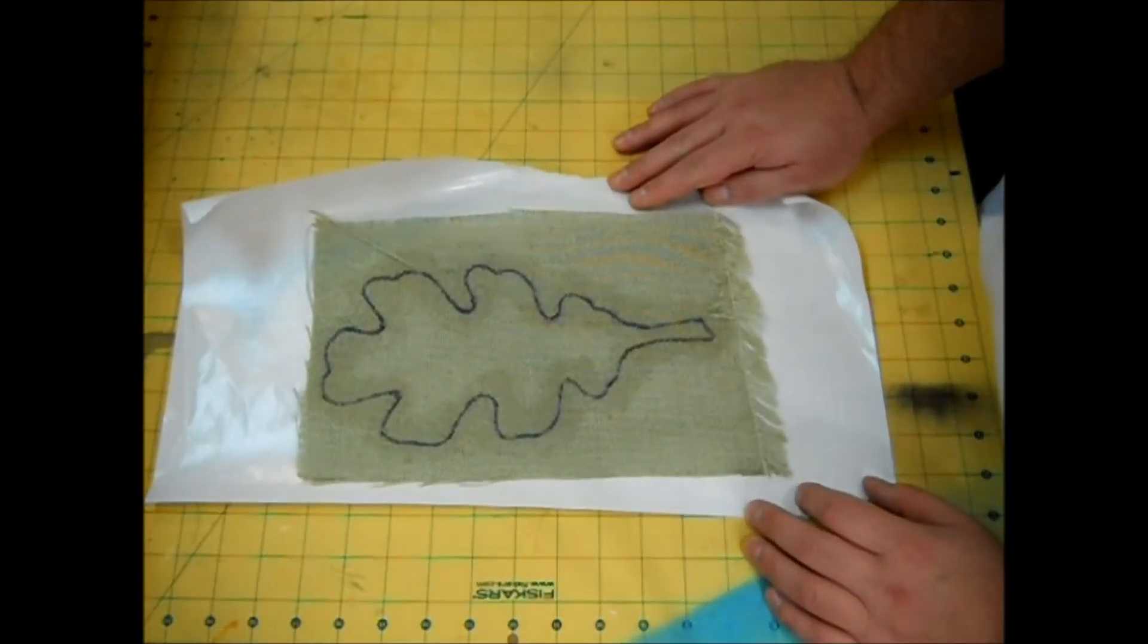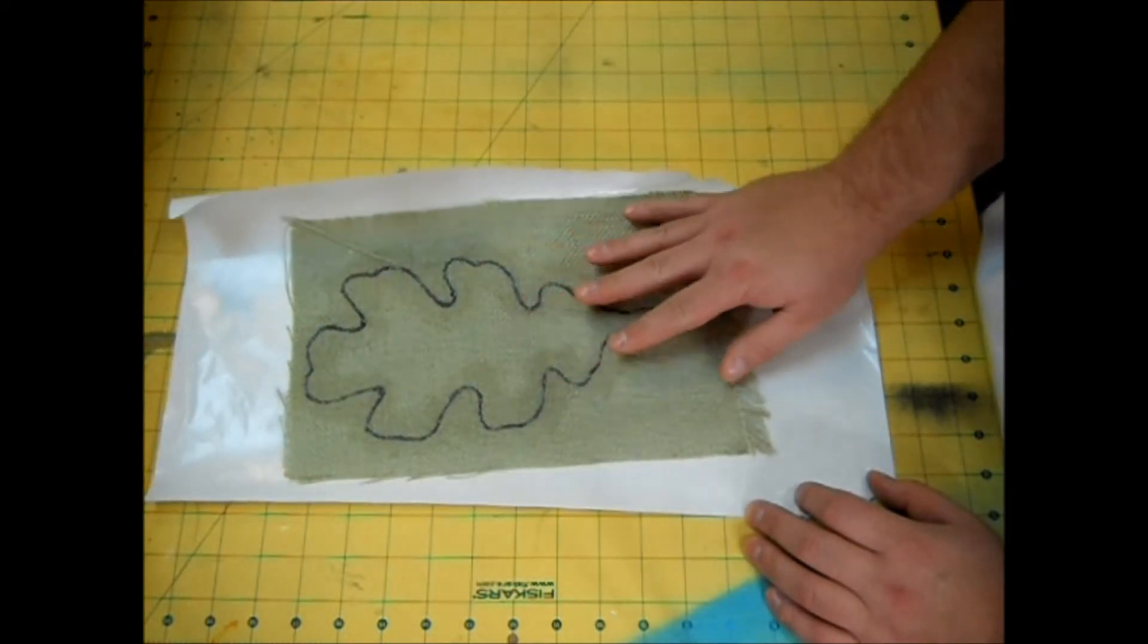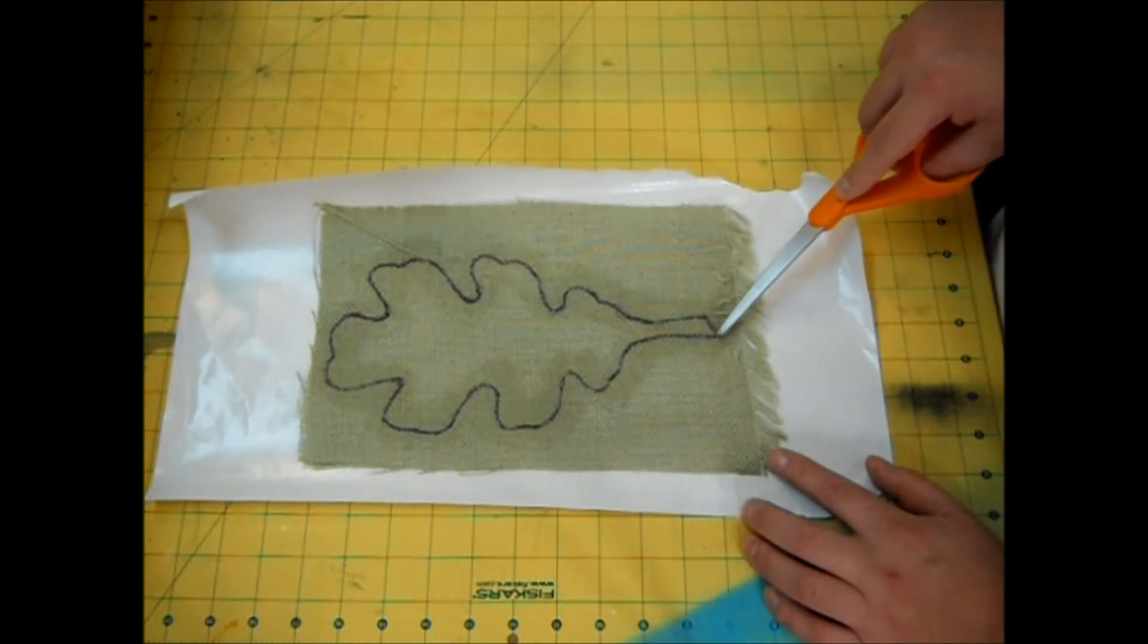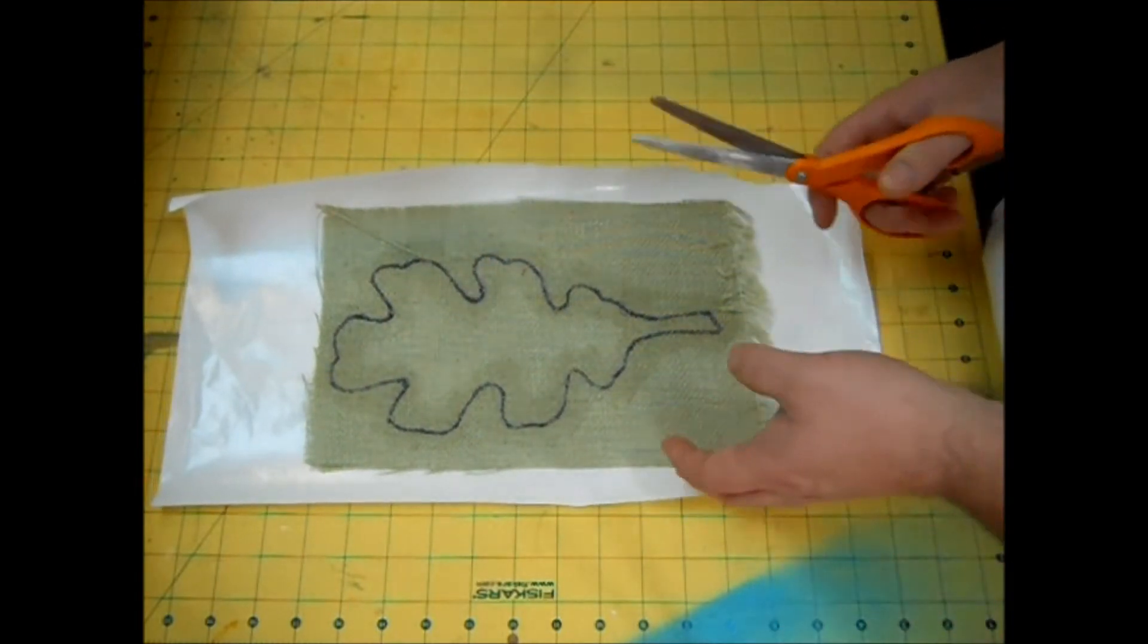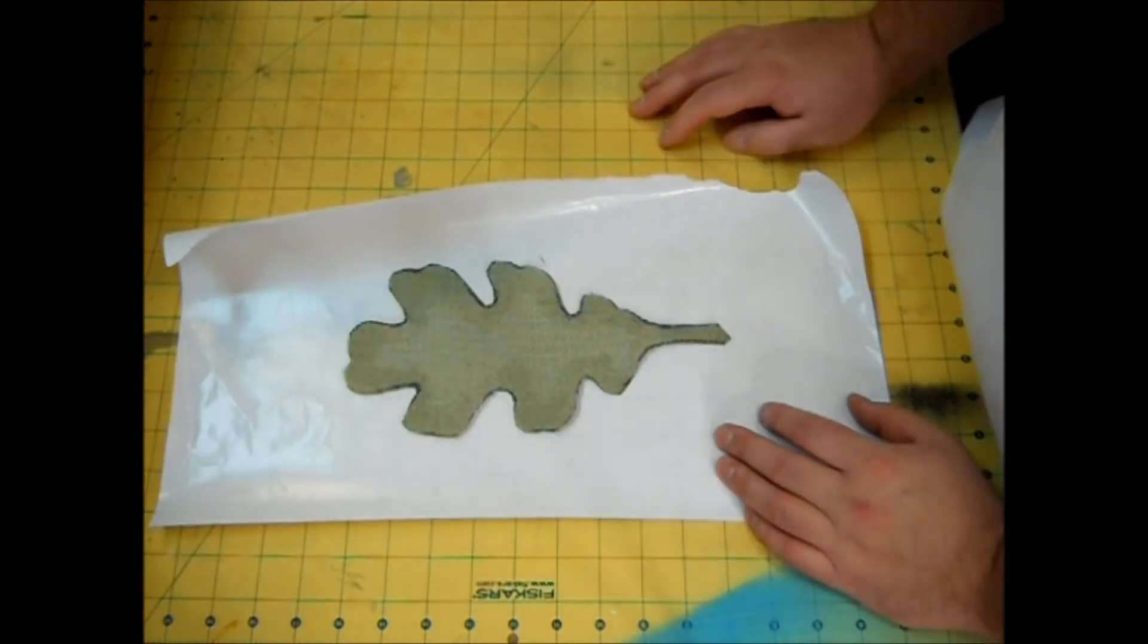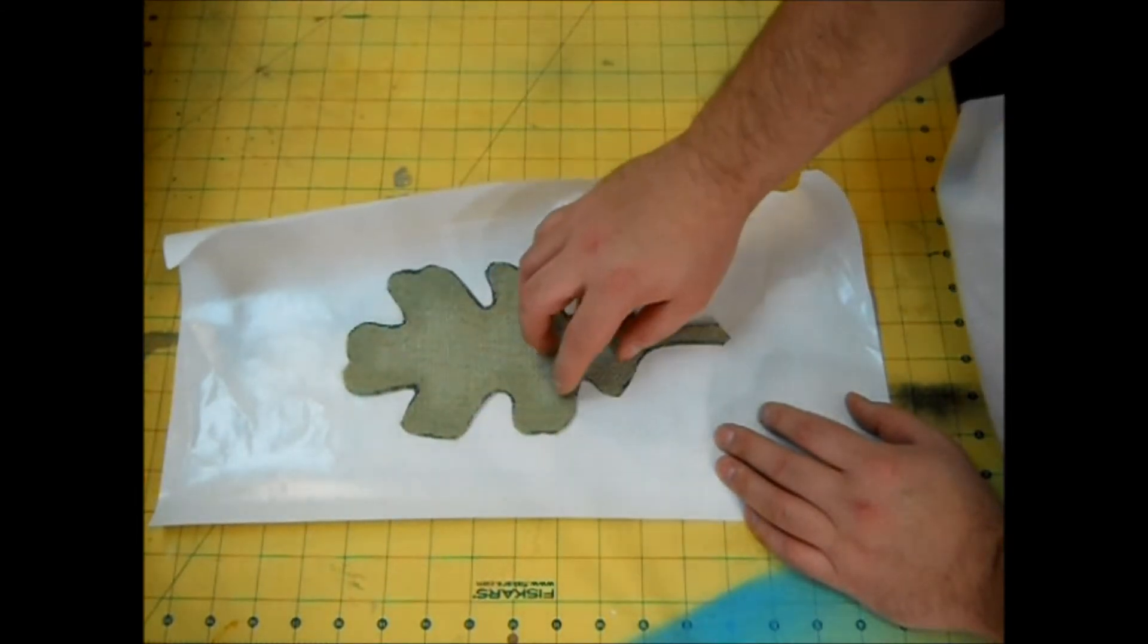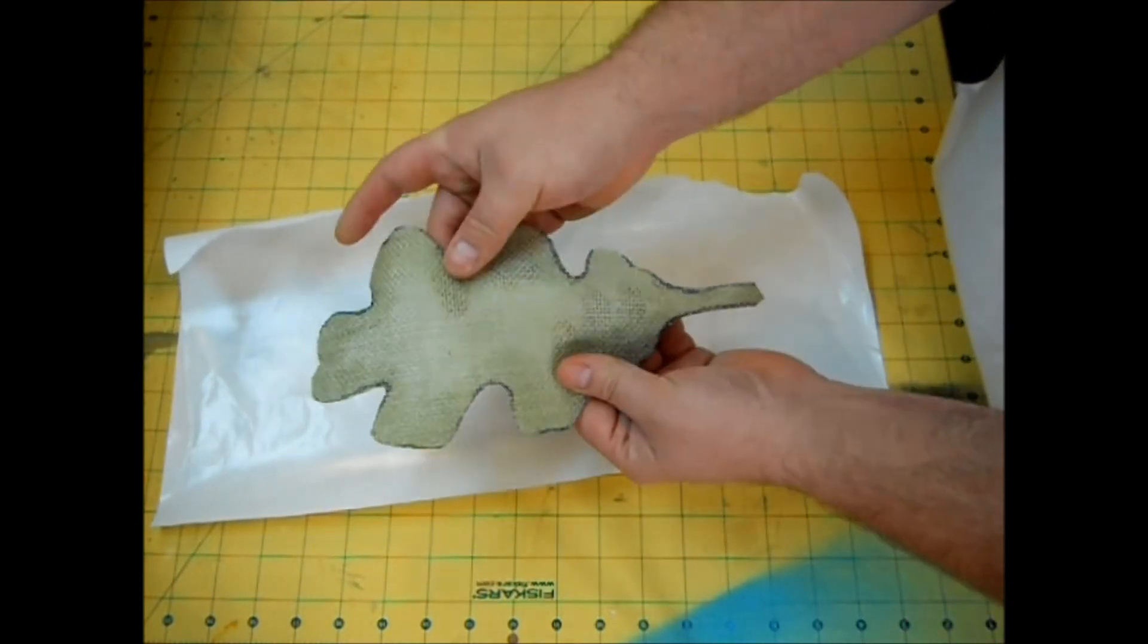After your decoupage is completely dry, you then want to peel your leaf up off the paper if it's stuck on your paper. You then want to take your scissors and cut out your leaf right along the line. And you should have something that looks like this. Because we put decoupage around the outside of the leaf, that keeps the edges from fraying, yet keeps the inside still soft and pliable.